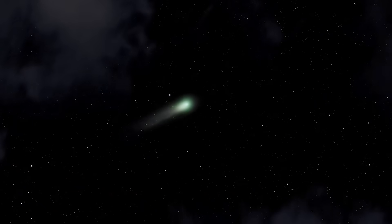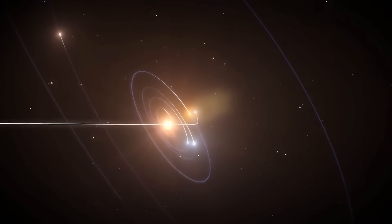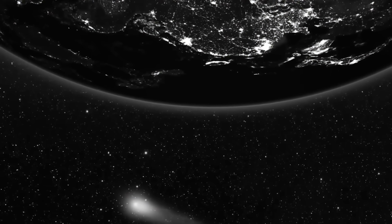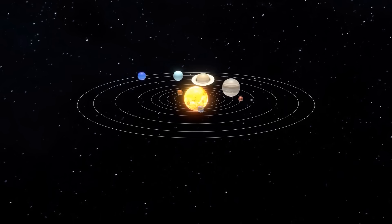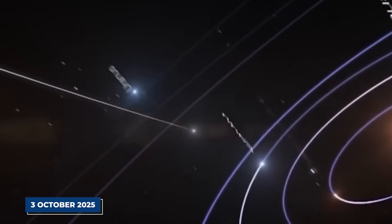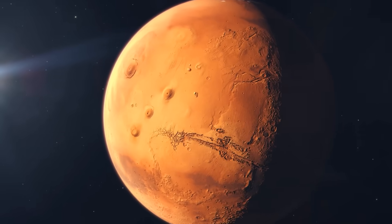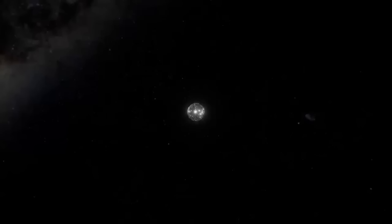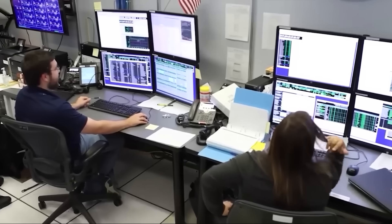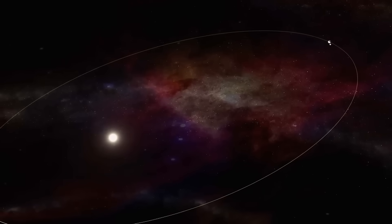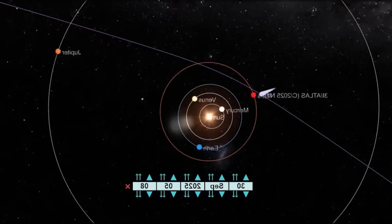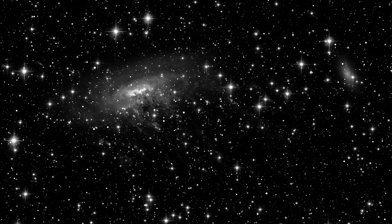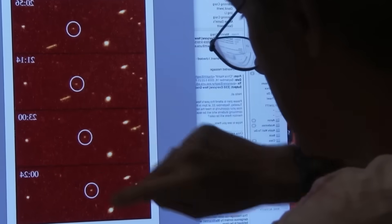But the coincidences don't stop there. The path of 3I Atlas seems almost like a guided tour of our solar system. After swinging by the sun, its trajectory is set to take it remarkably close to several key planets. On October 3rd, 2025, it will have a blind date with Mars, passing within 18 million miles. This is close enough for the HiRISE camera on the Mars Reconnaissance Orbiter to get our best images yet. Then it continues on its journey, set for a close approach with Jupiter. Avi Loeb describes this trajectory as fine-tuned and deliberate. He raises a chilling possibility. What if this path wasn't an accident? What if the object is mapping our system, observing our planets, or even deploying smaller probes?